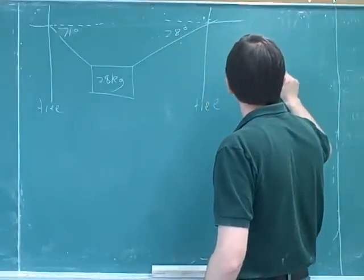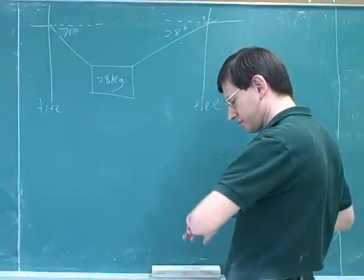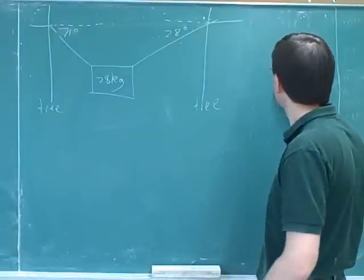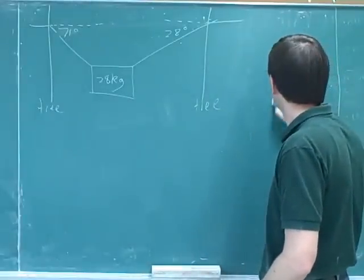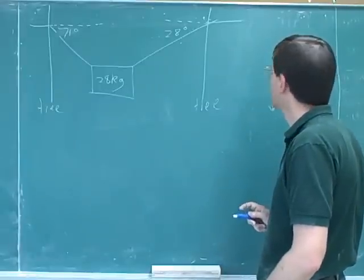How many free body diagrams would that give us? Only one. That's right. And what are the forces on this object? Gravity. Gravity is the first thing we should. What direction is that pointing? Downwards. Good. Weight, yes.